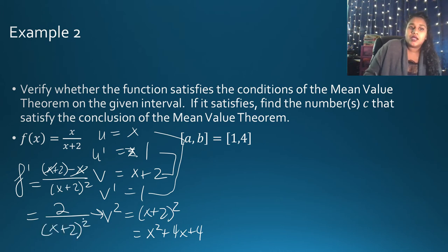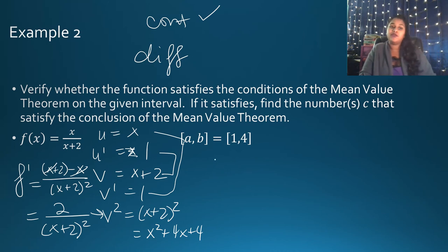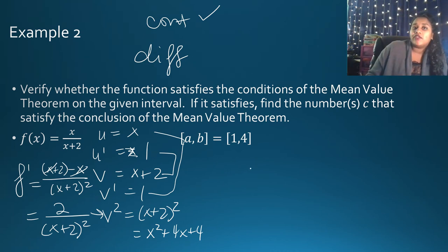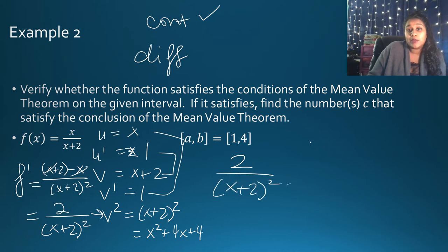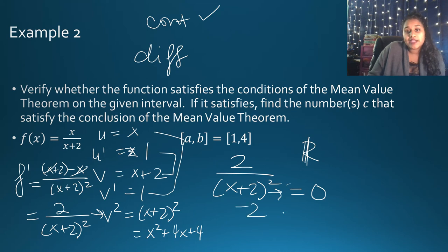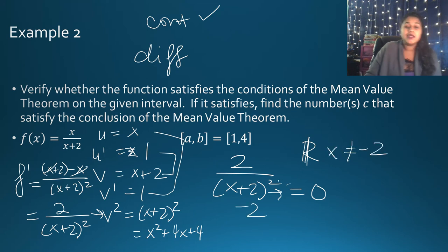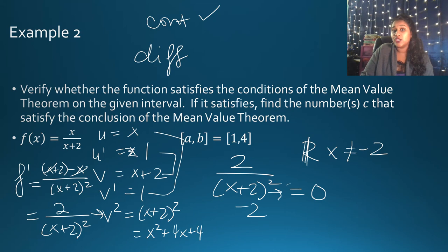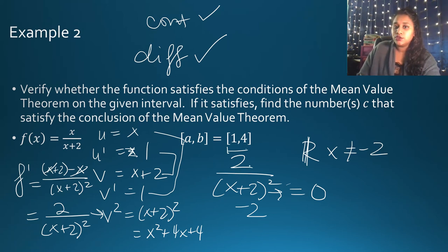We're still trying to satisfy conditions. We know it's continuous; now we check if it's differentiable between 1 and 4. For 2/(X + 2)², we check for domain errors by setting the denominator equal to zero. The exclusion point would be at X = -2. Since -2 does not lie between 1 and 4, the function must be differentiable between 1 and 4.